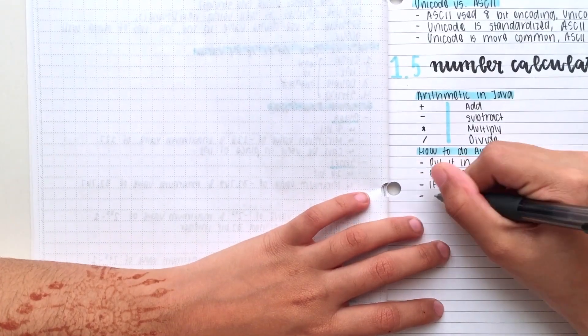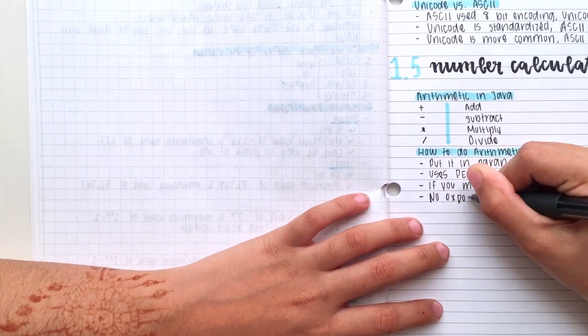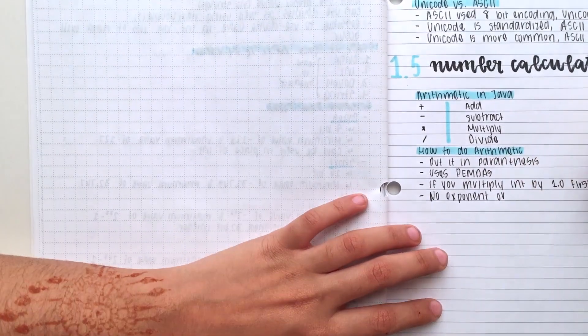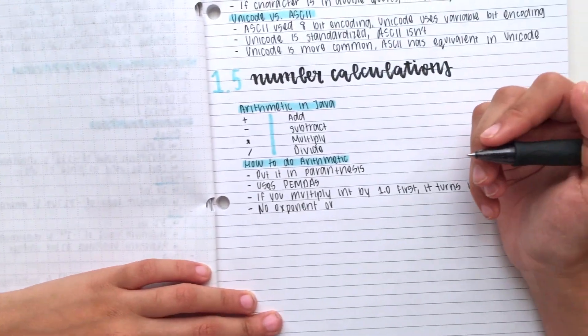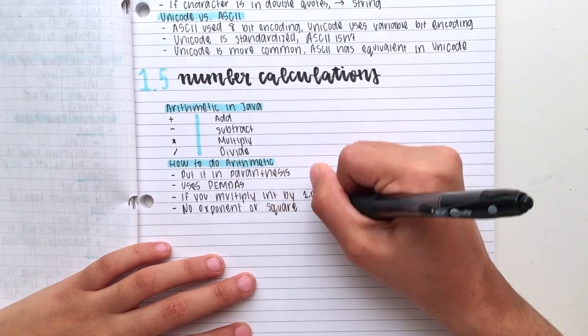So, I've already started on my notes. In this video, I'm on Unit 1, Lesson 5, which is why I have 1.5 at the top. Right next to it, I have written the name of the lesson in calligraphy with my brush pen.